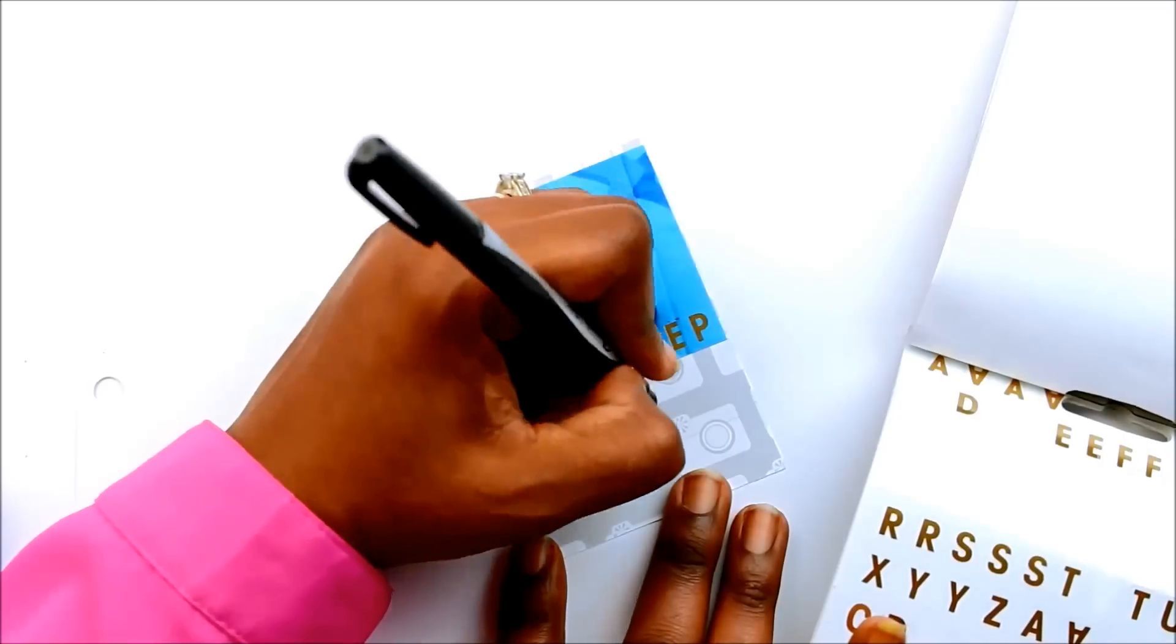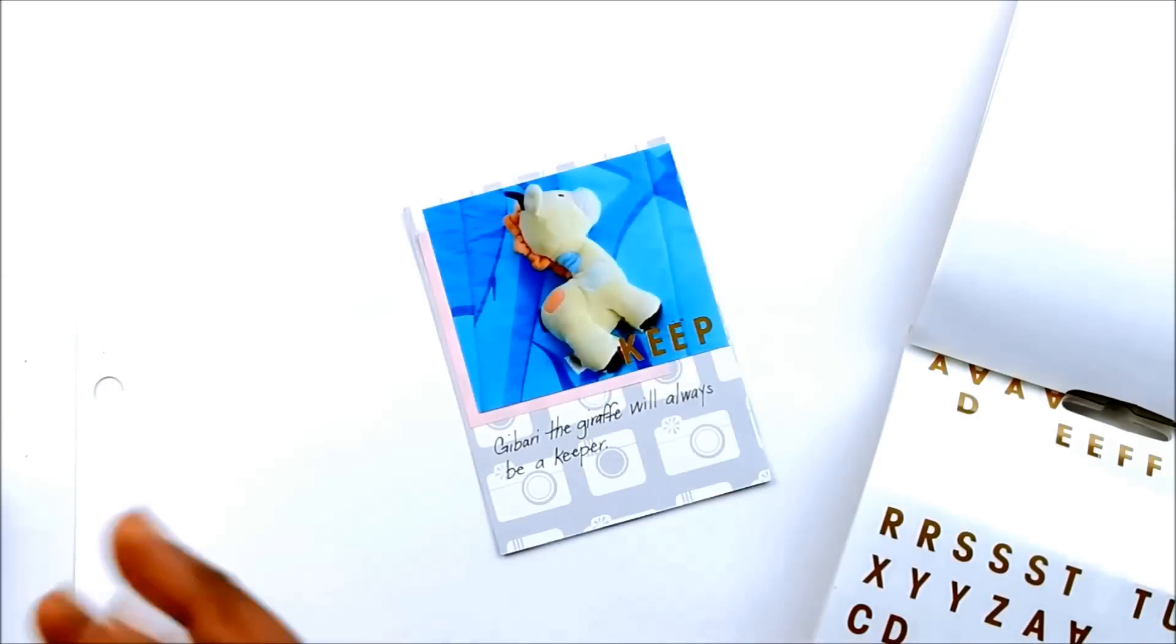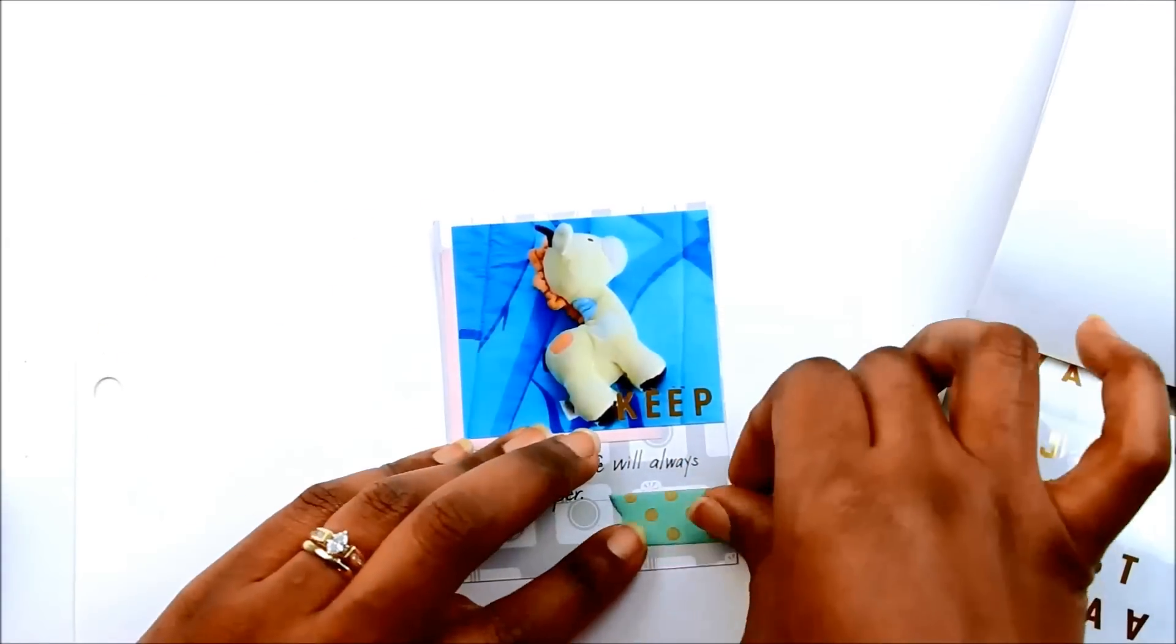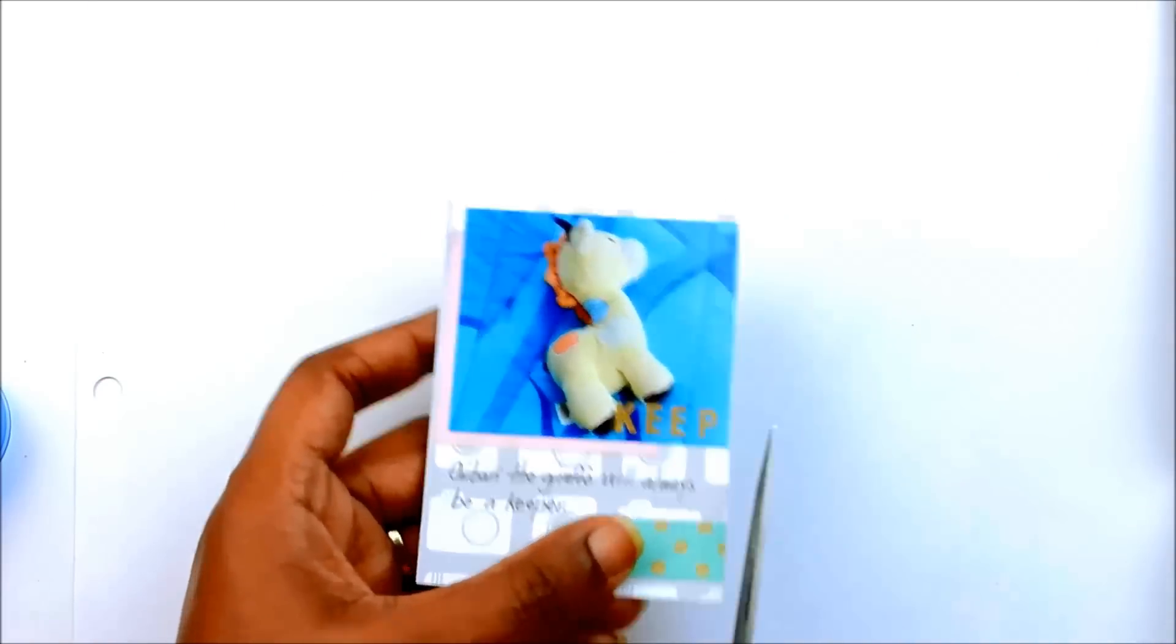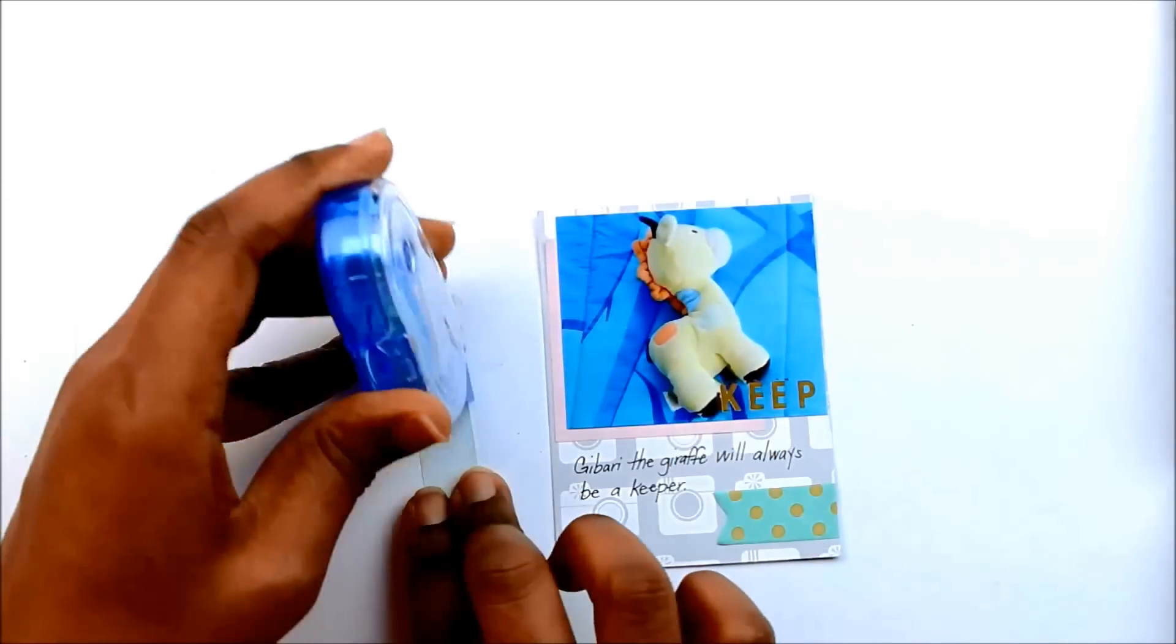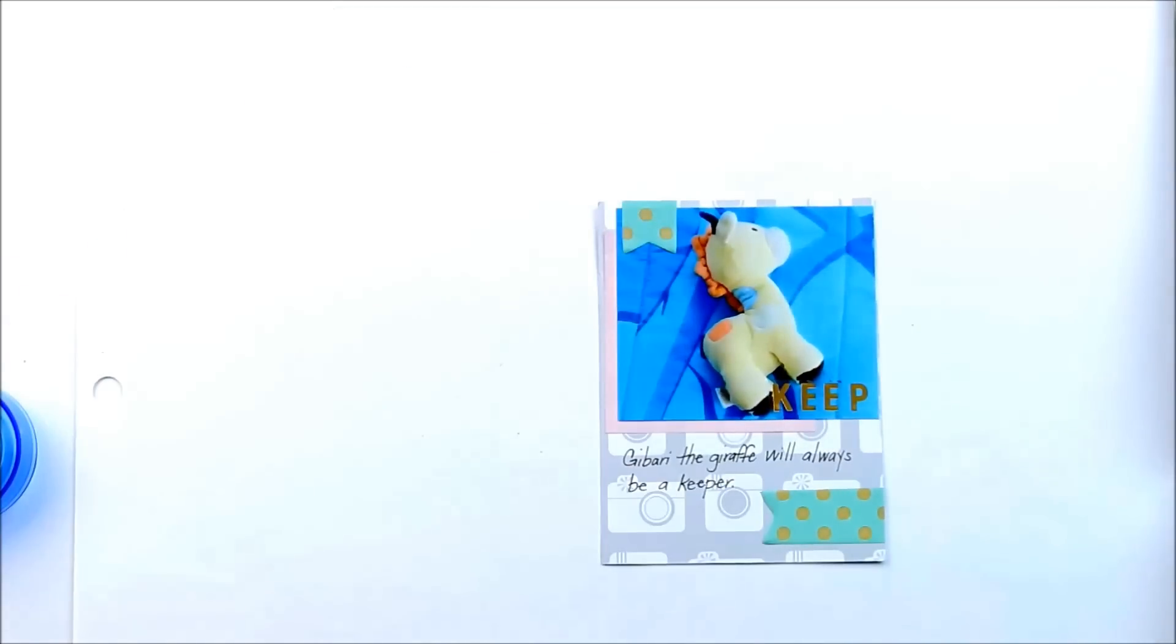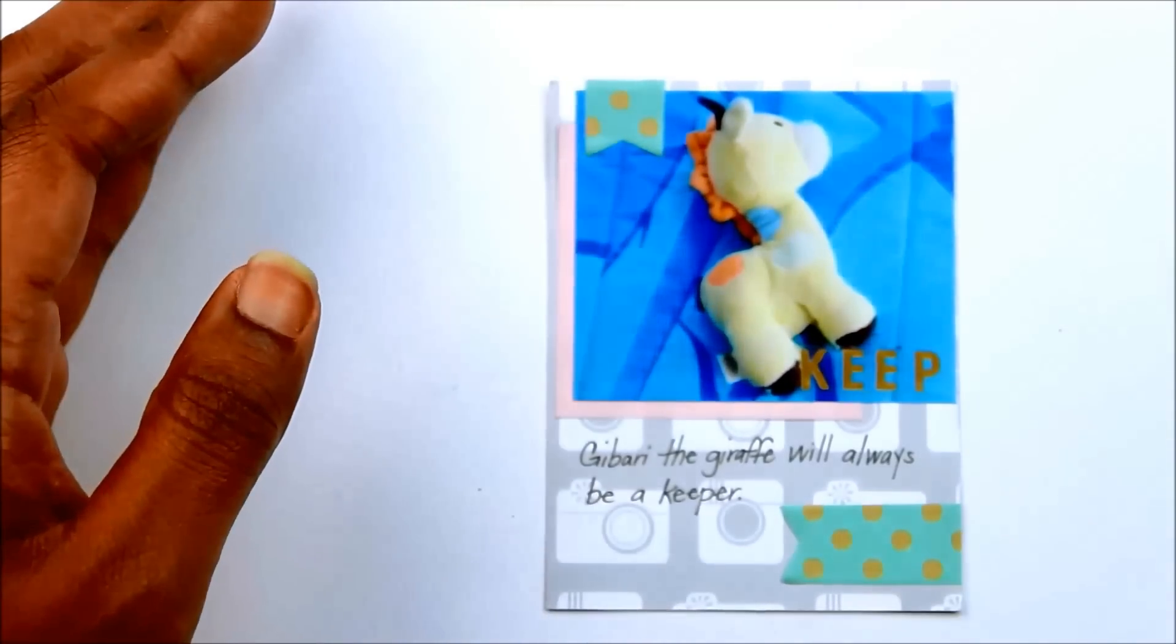I'm just writing the story about this giraffe. I'm just writing Jabari the giraffe will always be a keeper. I didn't go too much into detail on in this layout because this toy is documented in my son's baby album—how this giraffe got his name, when we bought it, why we bought it. So I just wrote just very simple that this will always be a keeper. I added some of those little page flags.